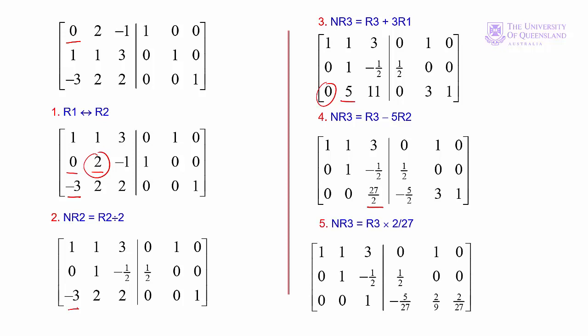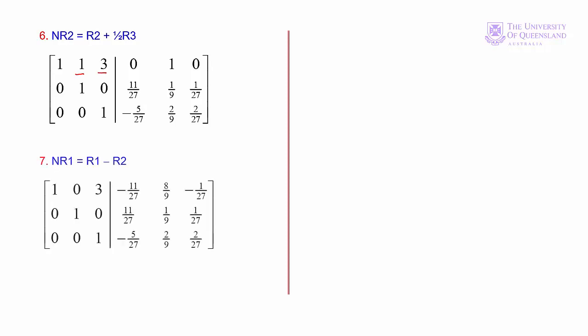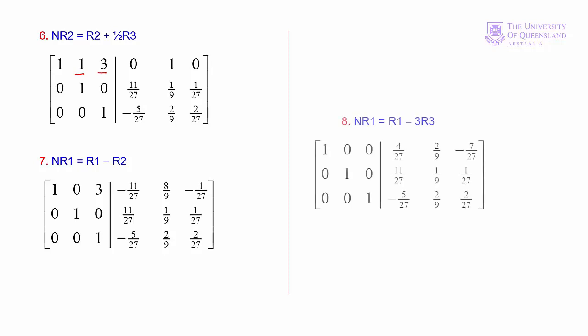Now we have an upper triangular matrix with 1s in the principal diagonal and 0s below. We work back up the matrix. We look at the 2,3 position and add one-half of row 3 to row 2. Finally we return to row 1: we convert the 1,2 position to 0 by subtracting 1 times row 2 from row 1, then convert the 1,3 position to 0 by subtracting 3 times row 3 from row 1. Now we have our augmented matrix in the form [I | A⁻¹].